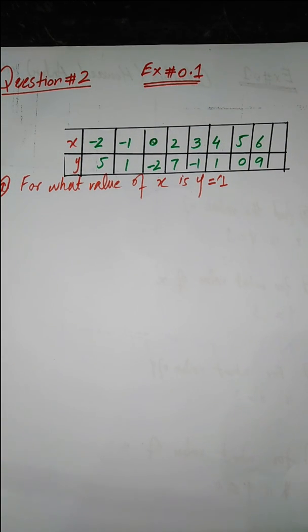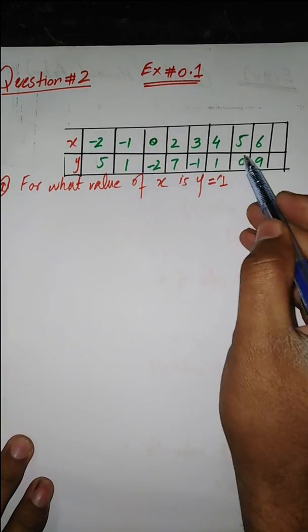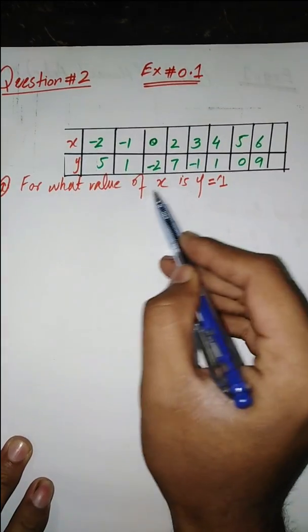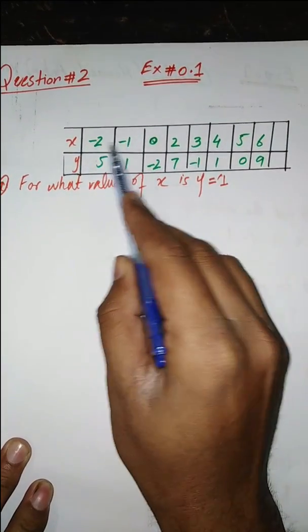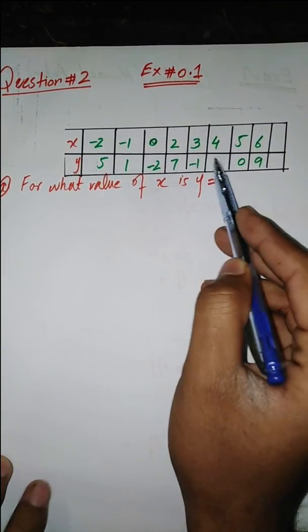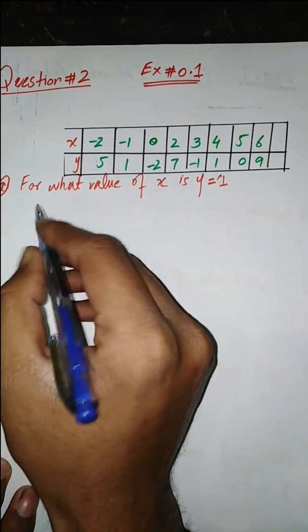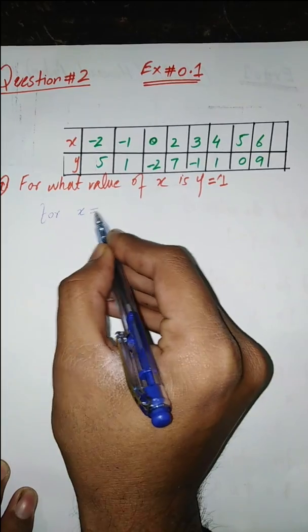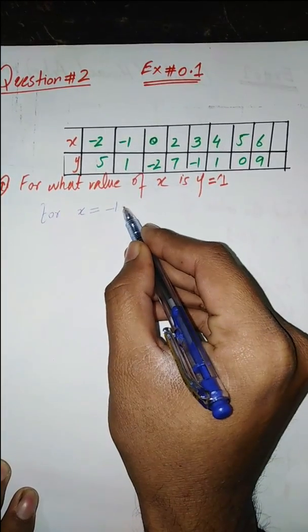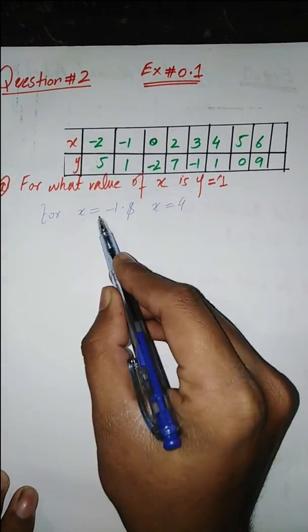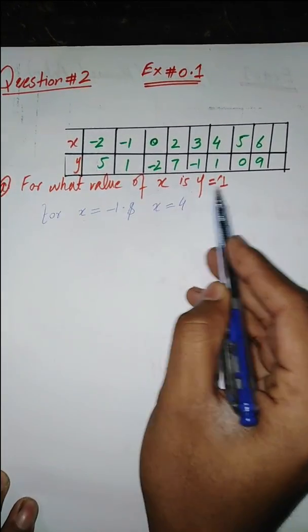The first part asks: for what value of x is y equal to 1? Looking at the table, y is 1 at two places. When x is minus 1, y is 1, and when x is 4, y is 1. So for x equals minus 1 and x equals 4, y equals 1.